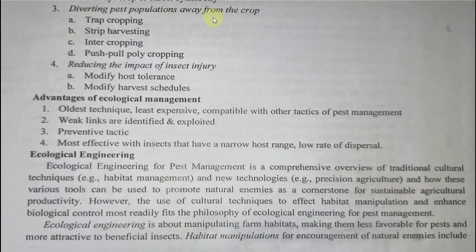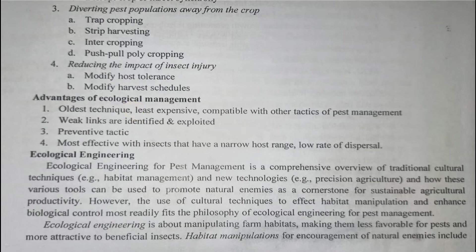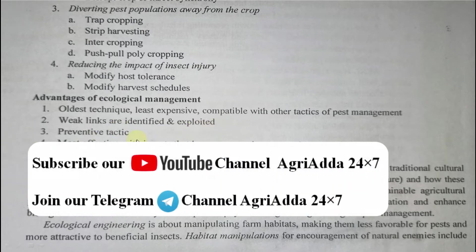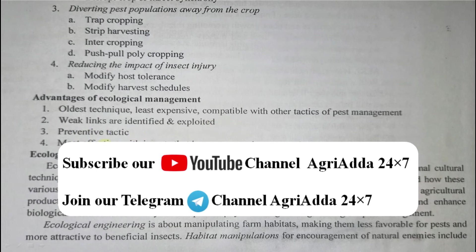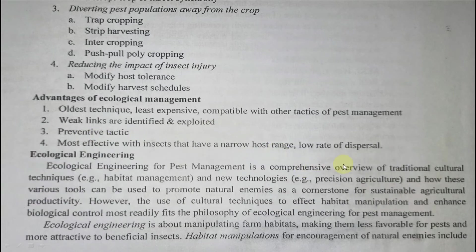The third approach is diverting the pest population away from the crop, done by using strip cropping, strip harvesting, inter-cropping, and push-pull technology. The fourth approach is reducing the impact of insect injury by modifying host tolerance and modifying the harvest schedule. Advantages of ecological management include: it is the oldest technique, least expensive, requires no additional inputs, and is compatible with all other techniques. Weak links are identified and exploited through preventing techniques. It is most effective with insects that have a narrow host range and a low rate of dispersal.